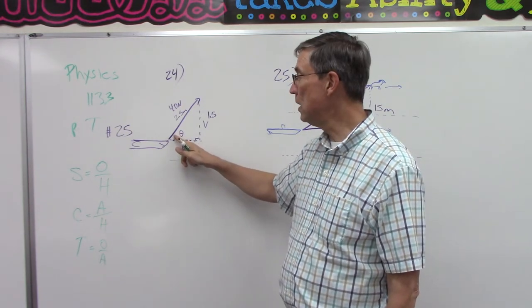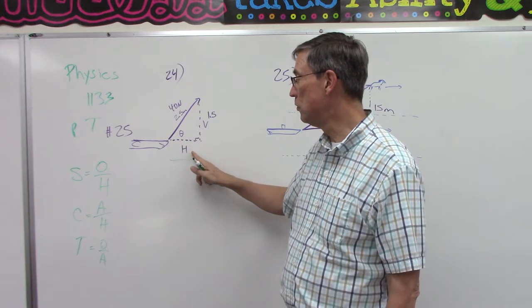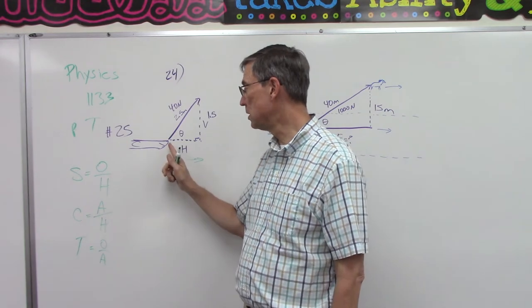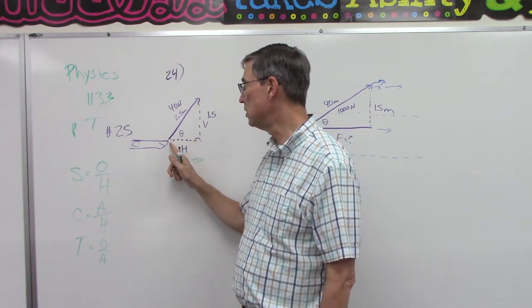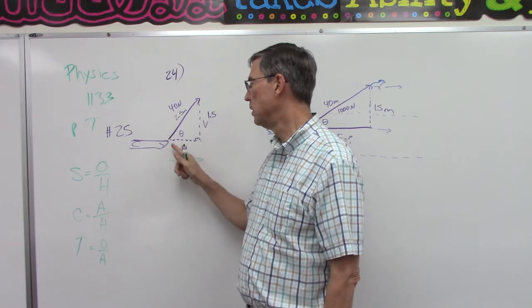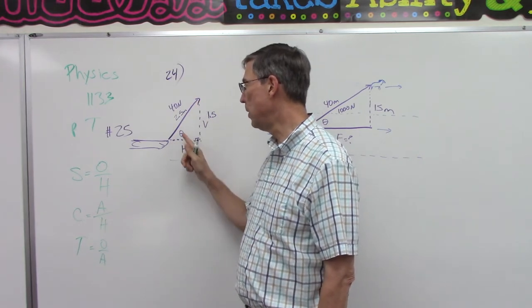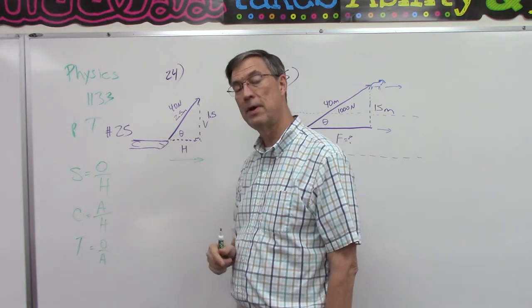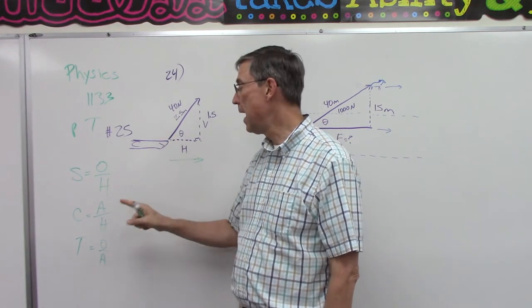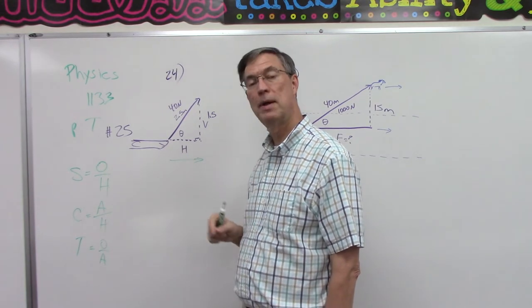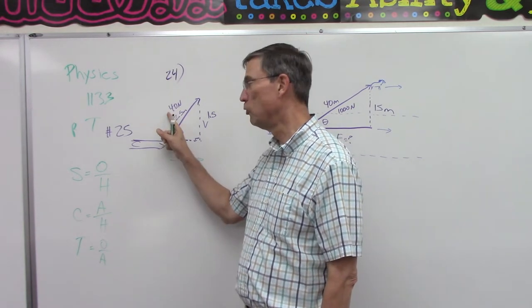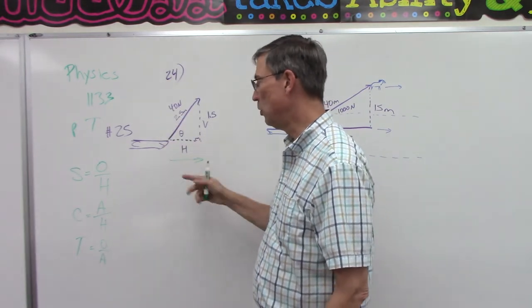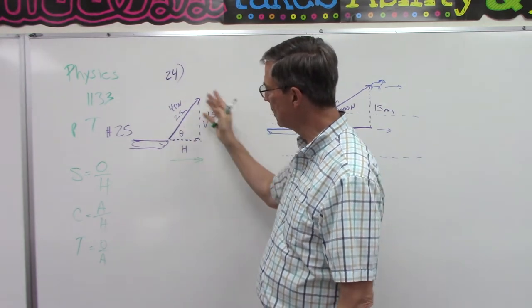So then once you know the angle, and we know the hypotenuse is 40, we can solve to find the horizontal by using adjacent, because this side is adjacent to the hypotenuse. So adjacent over hypotenuse. So if I'm solving for the adjacent, I'm going to take the cosine of that angle that I found and multiply that times the hypotenuse, 40. Once you do that, you will have the horizontal.